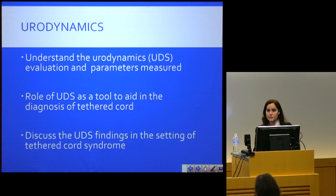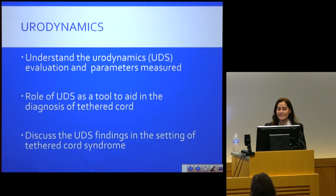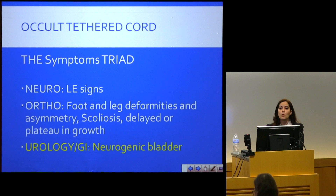I work with adults — that's my specialty — so some of the information I'm going to present and the findings are in the adult population newly diagnosed with occult tethered cord. And as Dr. Klinga mentioned, urinary and bowel issues are one of the most important components of the symptoms that these patients present.